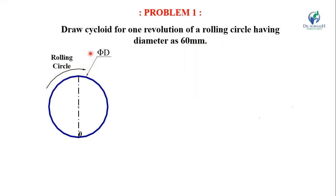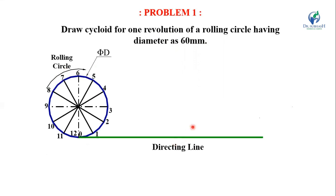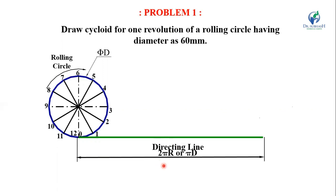Divide the rolling circle into 12 equal divisions numbered 1 through 12. Now draw the directing line. The length of the directing line equals pi times d, so multiply 60 by pi to get the total length. Divide this directing line into 12 equal divisions numbered 0 through 12. The number of divisions of the directing line equals the number of divisions of the circle.